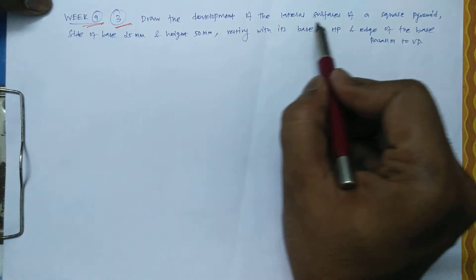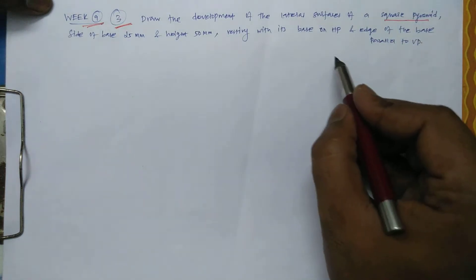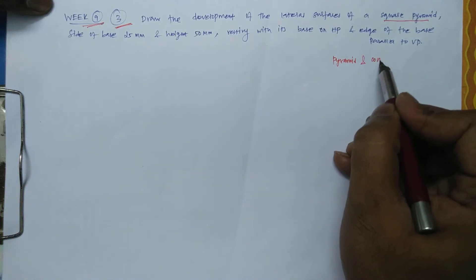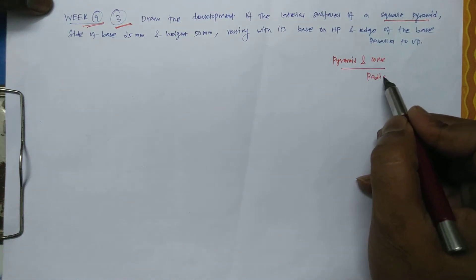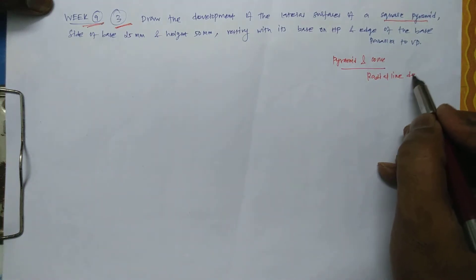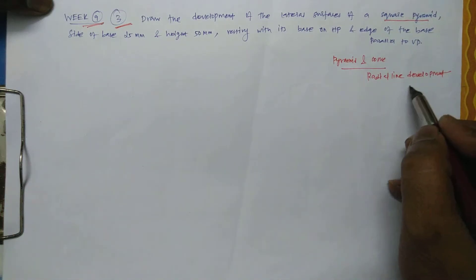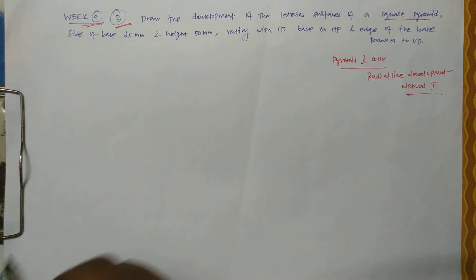When there is a pyramid and cone, these are all considered in method 2, that radial line development method. So it is method 2, radial line development method.